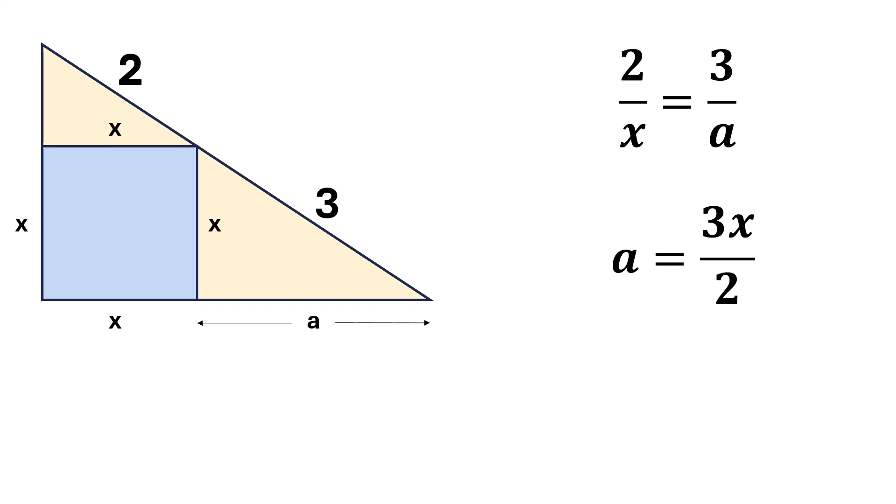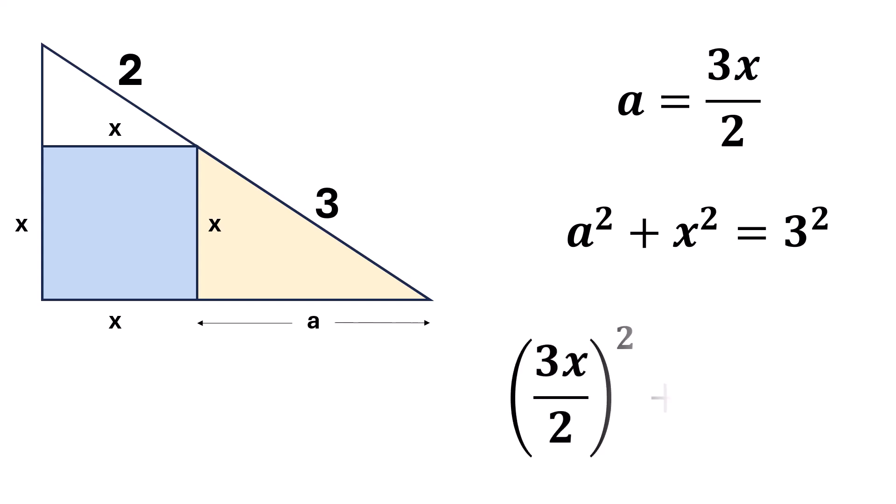Now, let's apply the Pythagoras theorem to the shaded triangle. We have a squared plus x squared is equal to 3 squared. Substituting the value of a, we get 3x over 2 whole squared plus x squared is equal to 9.